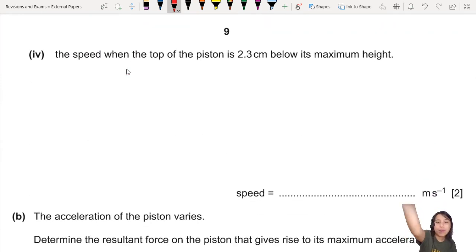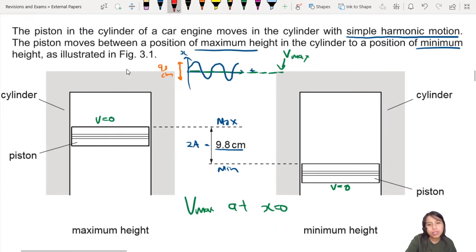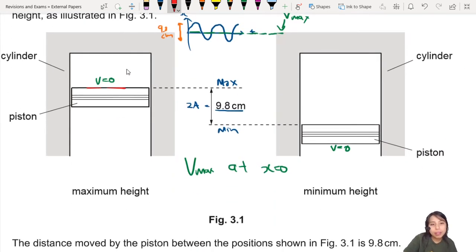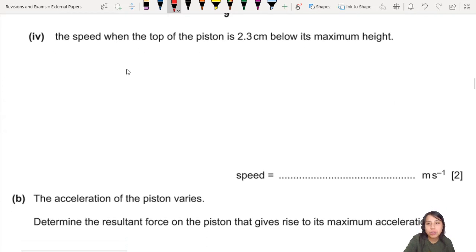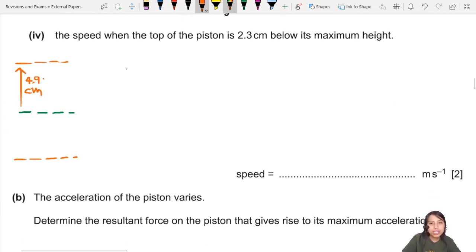Let's continue. What is the speed when the top of the piston is 2.3 cm below maximum height? Top of the piston? Notice how everything is calibrated with respect to the top of the piston, so we could treat that as the point. The green line is the equilibrium position where there is no displacement. They're asking for the speed when the top piston is 2.3 cm below maximum height. How to calculate? Don't panic. Stay calm. We want to find speed.